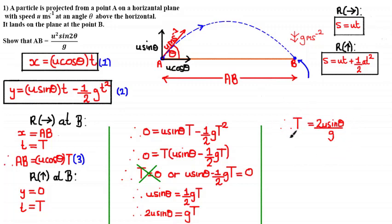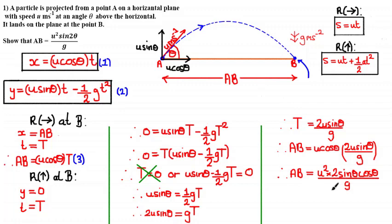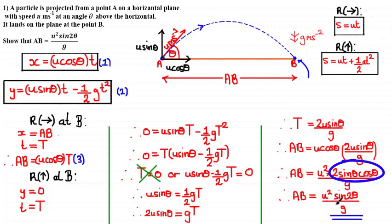Solving u sine theta = ½gT: multiplying both sides by 2 gives 2u sine theta = gT, so T = 2u sine theta over g. Substituting back into the horizontal expression: AB = u cosine theta times 2u sine theta over g = u squared times 2 sine theta cosine theta over g. Using the identity 2 sine theta cosine theta = sine 2 theta, we get AB = u² sine 2 theta over g, which proves the result.